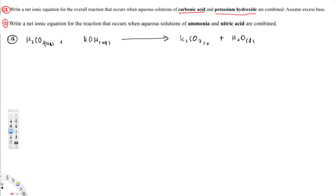Let's balance this equation. Here we have two potassium on the product side, so we have to balance potassium on the reactant side. Here we have two hydrogen and then four hydrogen, so this coefficient is going to be two. Everything else is already balanced.